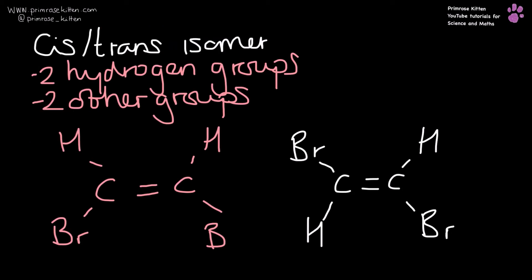So cis/trans isomerism is a subset of EZ isomerism because generally this is going to have two hydrogen groups and two other groups. So here we have our highest priority groups. And it's easy here to work out the highest priority groups because it's not going to be hydrogen. It's going to be these bromines here.